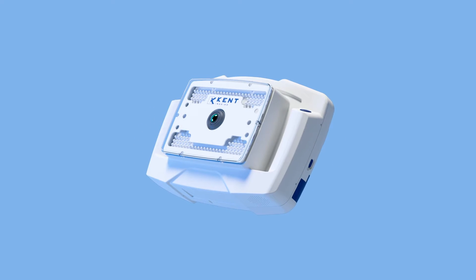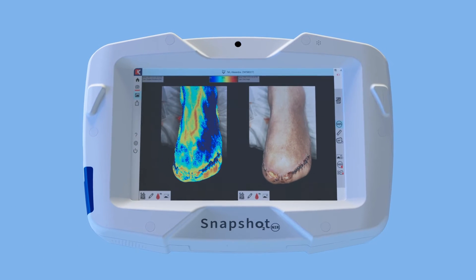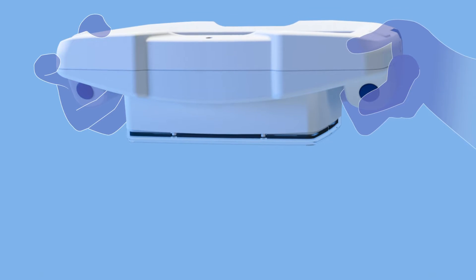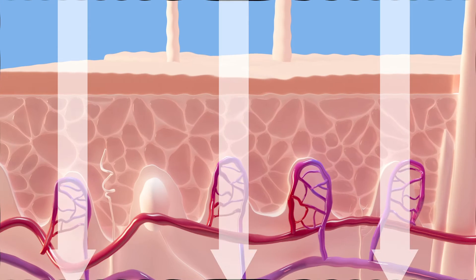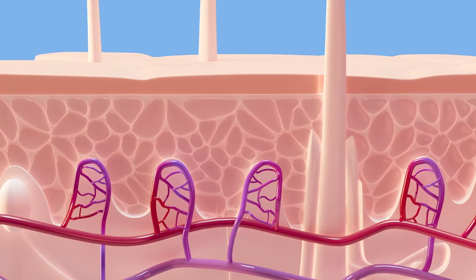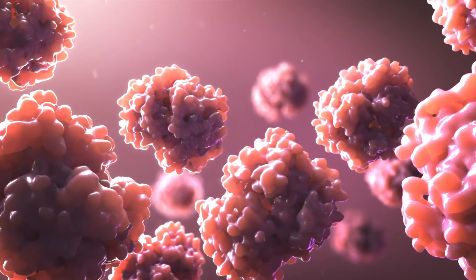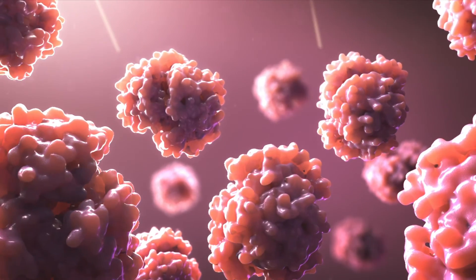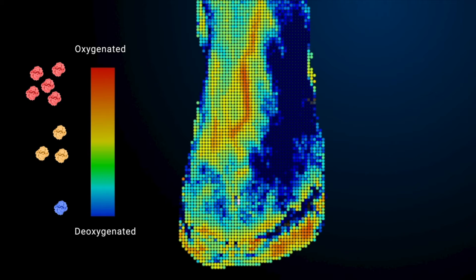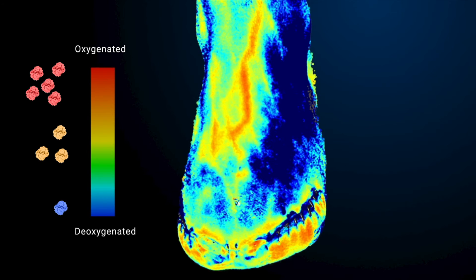Snapshot NIR is an imaging device that visualizes and maps tissue oxygen saturation in the capillary network. It flashes six near-infrared electromagnetic wavelengths of light for about one millisecond. These predetermined wavelengths of known light illuminate the tissue and are absorbed differently by the variations in the electron clouds of the oxygenated and deoxygenated hemoglobin molecules. The light that is not absorbed is reflected and measured by the Snapshot NIR device. A patented algorithm assesses oxy and deoxy hemoglobin levels to determine the oxygen saturation at each image pixel of the return signal. A tissue oxygenation map is displayed within a matter of seconds.